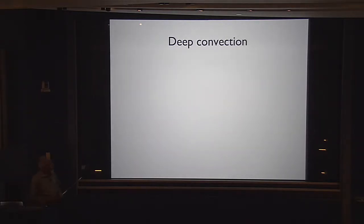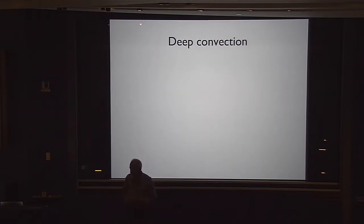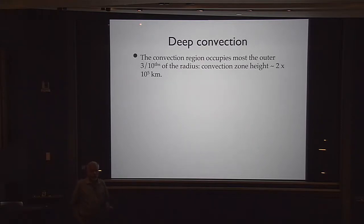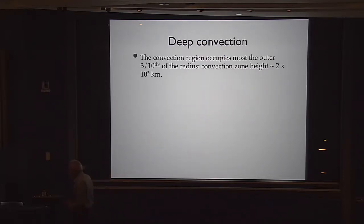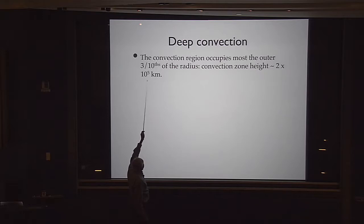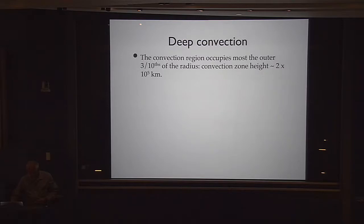The part that is not so well understood is the so-called deep convection, going from seven-tenths of the solar radius all the way to the skin — nearly thirty percent of the radius if you leave out the very last part. This is something you cannot really observe directly, although I will tell you how we may observe some part of it. It occupies nearly three-tenths of the solar radius, about that many kilometers — a huge distance worth remembering.